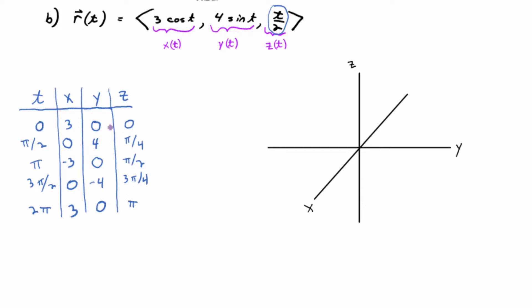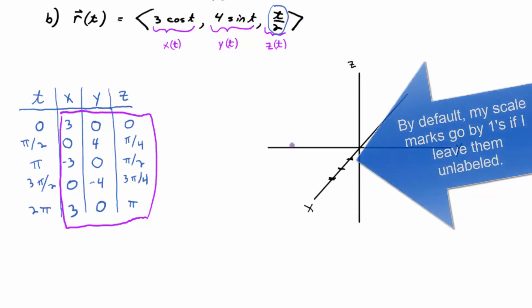So now unless you decide to plug in more t values, you're done with t, and you're essentially going to plot these points and connect the dots in a nice, smooth way. Nice, smooth curve. So three, zero, zero. Let me go out a distance of three on the x-axis. Something like that. And I'll do it in red, so there it is. Three, zero, zero. Zero, four, pi over four.